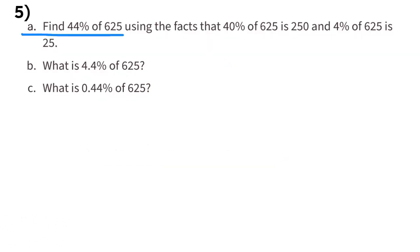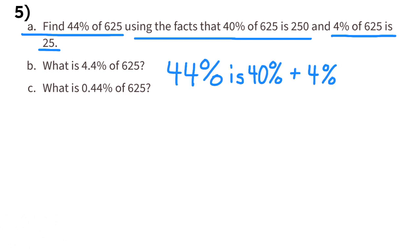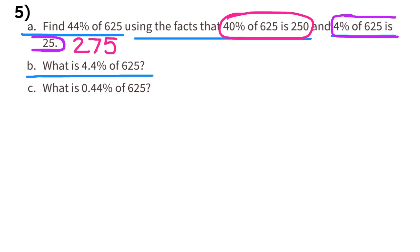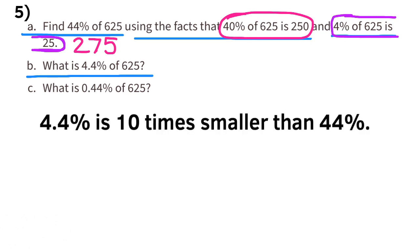Problem number 5. Find 44% of 625 using the facts that 40% of 625 is 250 and 4% of 625 is 25. Since 44% is 40% plus 4%, we add 250 and 25 to get 275. So 44% of 625 is 275. B: What is 4.4% of 625? Since 4.4% is 10 times smaller than 44%, our answer is 10 times smaller than 275, which is 27.5.